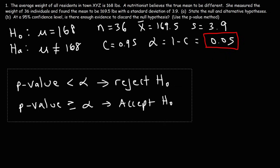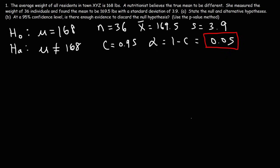For the traditional method, we compare the calculated z-value with the critical z-value associated with the significance level. Now, are we dealing with a one-tailed test or a two-tailed test? Because the alternative hypothesis states that the mean doesn't equal a certain number, we're going to have a two-tailed test.